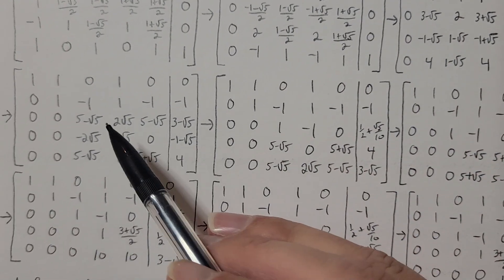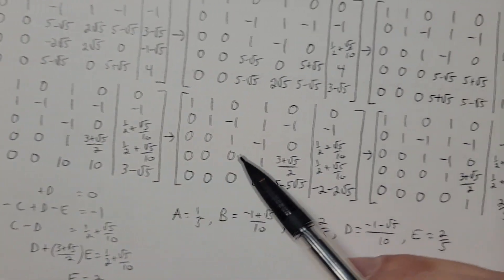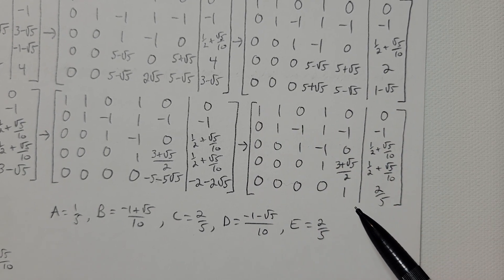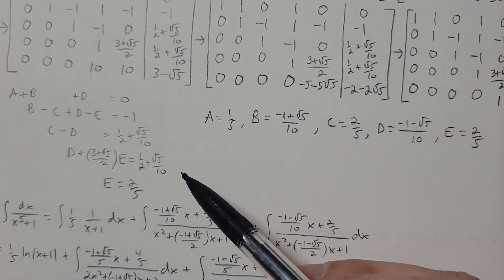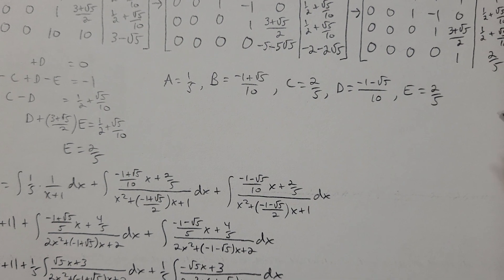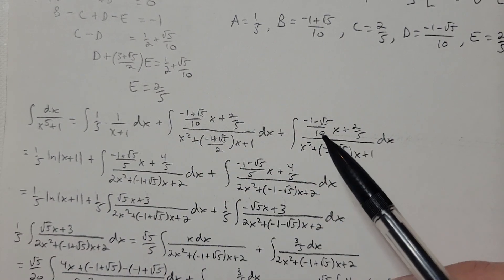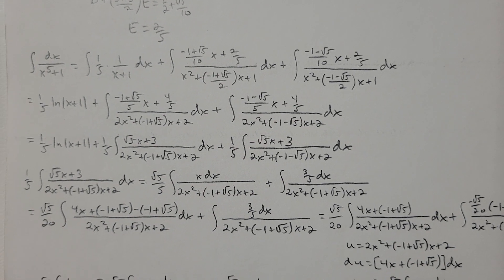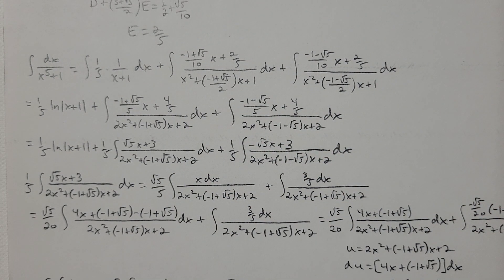The fastest way to solve this system is using matrices. I set up the matrix and row-reduce to get row echelon form — ones down the diagonal and zeros in the lower triangular part. Converting back to a system gives: a=1/5, b=(-1+√5)/10, c=2/5, d=(-1-√5)/10, e=2/5. Now we can finally start integrating — after all that setup.